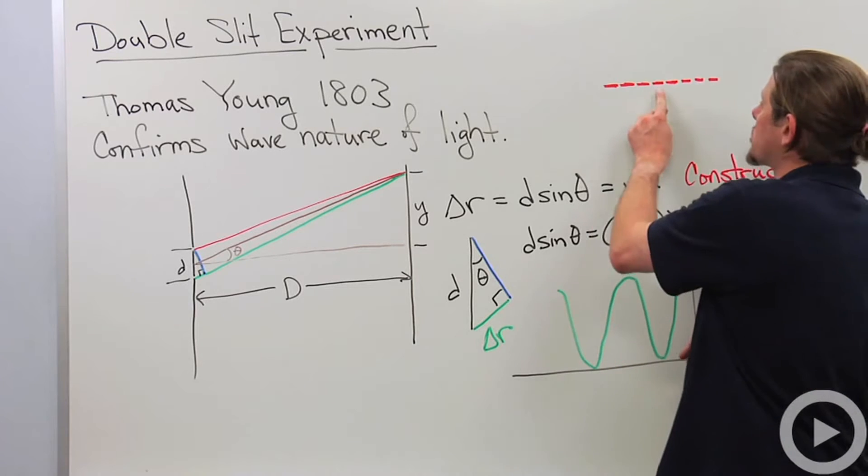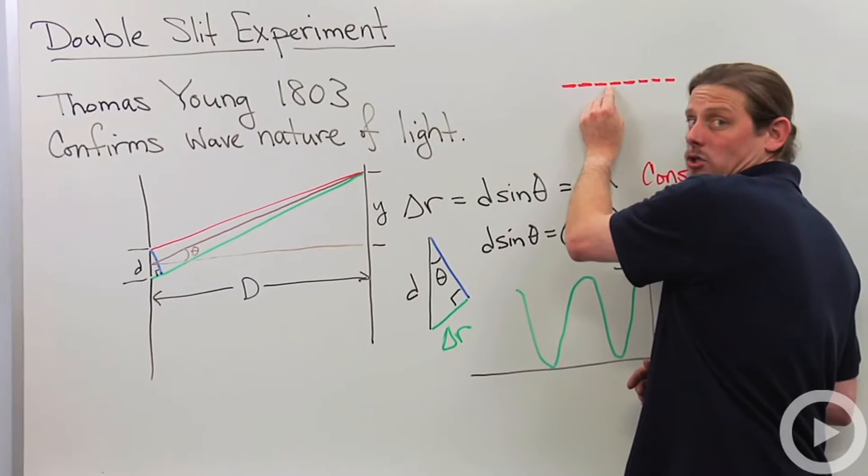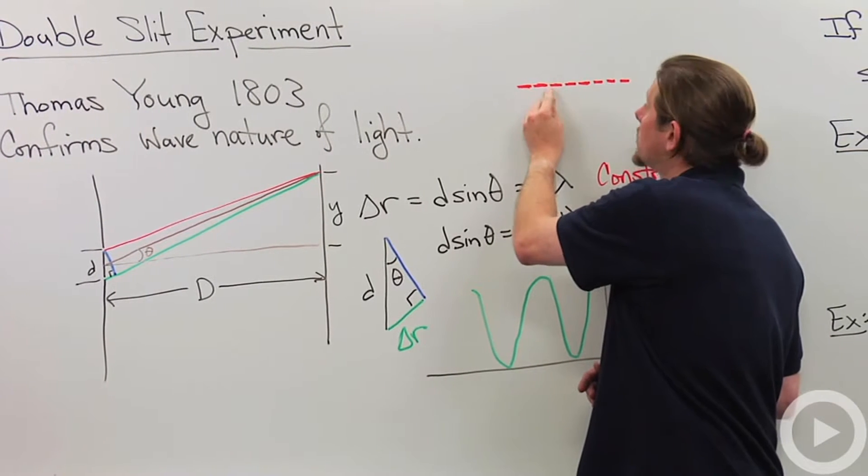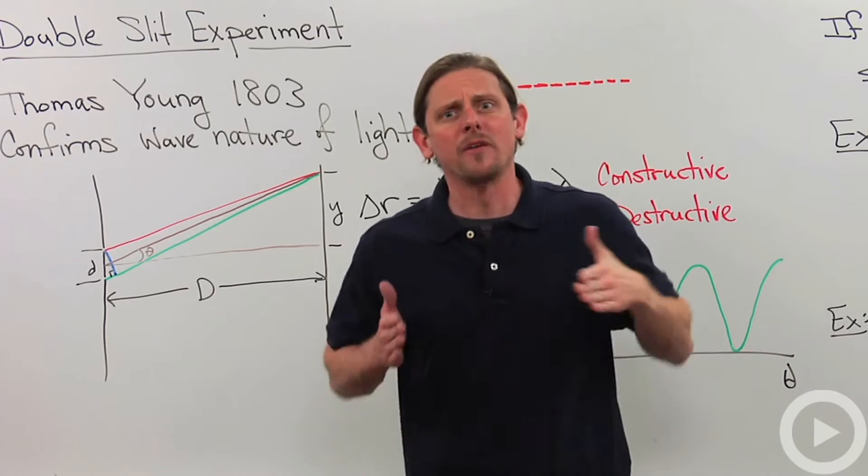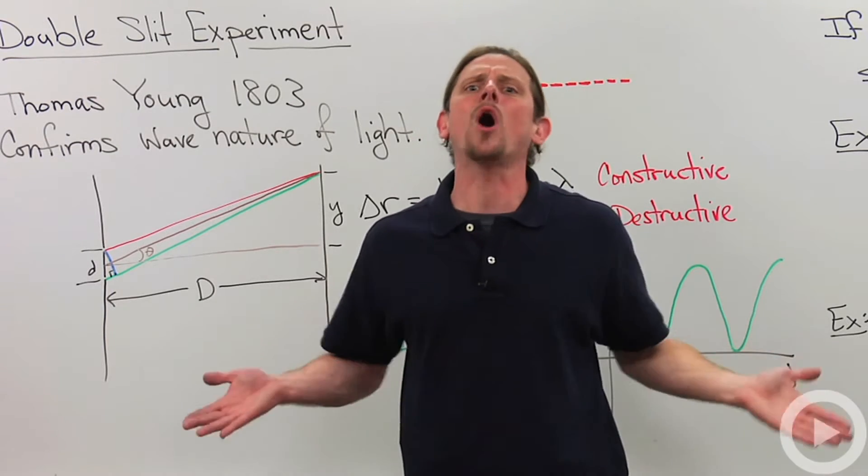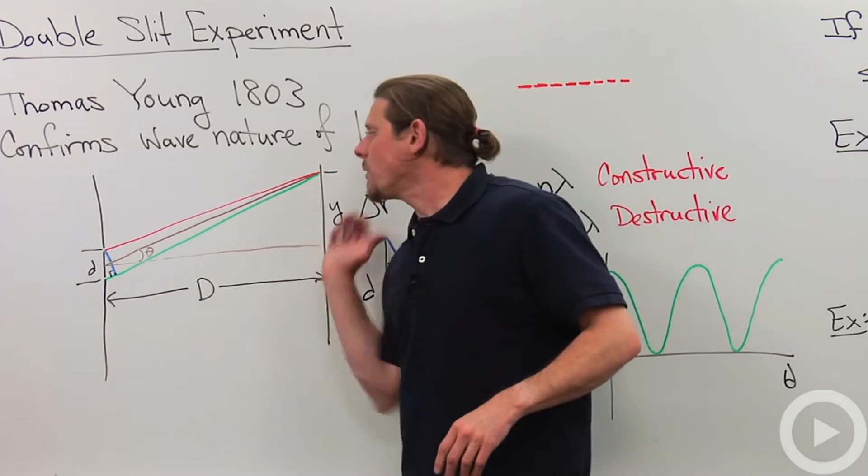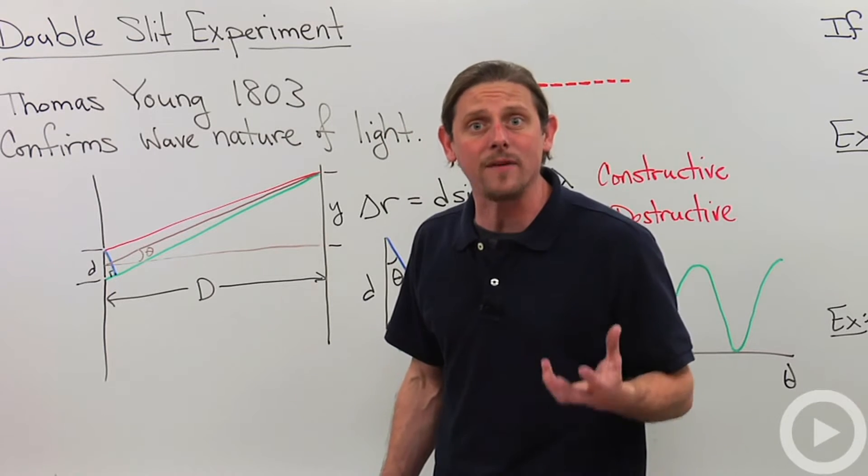And what we end up seeing is something that looks like this. So we have a central maximum where it's very bright, then we've got a dark spot with no light at all, then another maximum, dark spot, maximum, dark spot, maximum. And this was not at all expected if there were just particles going through, because how are you going to get a dark spot?